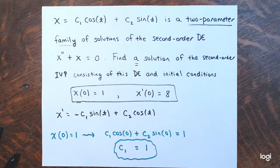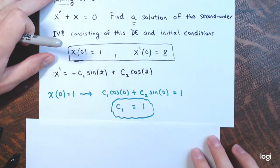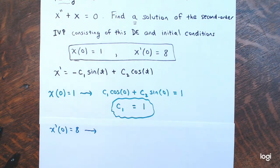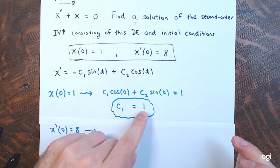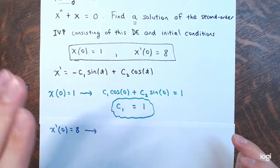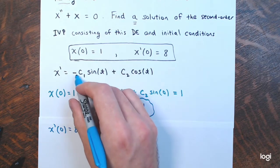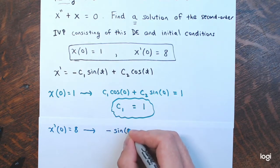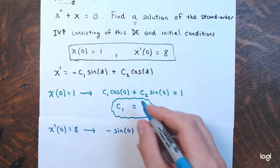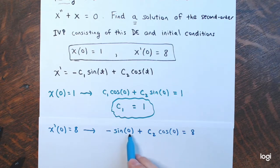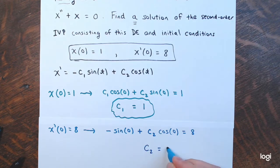Now I need to find c2 using the other condition x prime of 0 equals 8. X prime is negative c1 times the sine of t plus c2 times the cosine of t. Since c1 is 1, x prime of 0 is negative 1 times the sine of 0 plus c2 times the cosine of 0. The sine of 0 is 0 so the first term disappears, and the cosine of 0 is 1, so we have c2 equals 8.